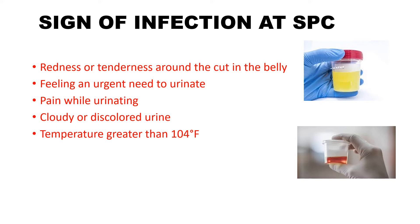How do we identify signs of infection at the SPC site? There will be redness or tenderness around the cut at the SPC site. The patient may develop bacteriuria, with feelings of an urgent need to urinate, pain while urinating, and cloudy or discolored urine. The patient may also have a temperature greater than 104 degrees Fahrenheit. These are the common signs of infection at the SPC site.